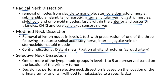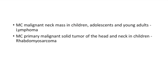Selective neck dissection: one or more of the lymph node groups in levels 1 to 5 are preserved based on the location of the primary tumor. The decision is based on the location of the primary tumor and its likelihood to metastasize to a specific site.